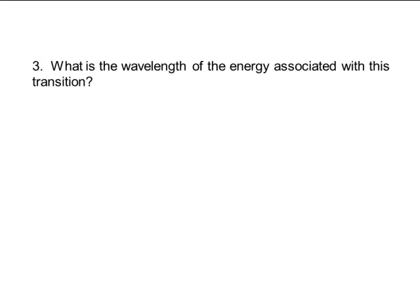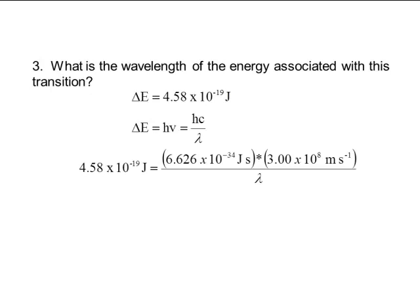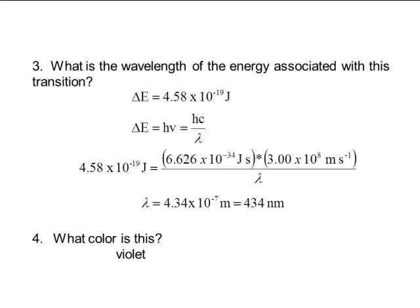What wavelength of light is associated with this transition? Since delta E equals h·nu or hc/λ, I can plug everything in — making sure I'm paying attention to units — and solve for lambda, getting 4.34 × 10⁻⁷ meters, or 434 nanometers. So this is going to be in the violet or blue-violet region. That's walking through a calculation dealing with the movement of electrons through quantized energy levels and the wavelengths associated with those transitions.